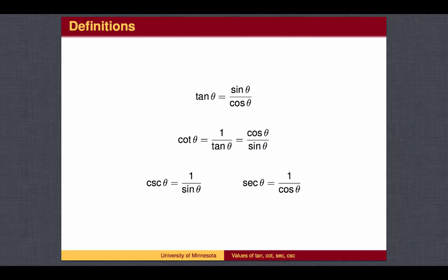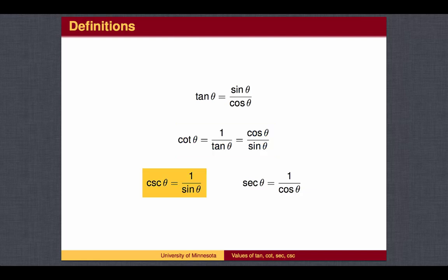First, using the functions sine and cosine, we will define the other four trig functions. The tangent is defined as the sine divided by the cosine. The other three functions are reciprocals. The cotangent is the reciprocal of the tangent. The cosecant, abbreviated CSC, is the reciprocal of the sine. And the secant is the reciprocal of the cosine. Note that each pair has one co-function. We can find the values of these functions based on the values of sine and cosine.